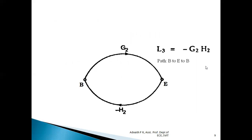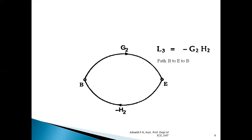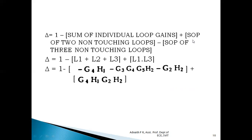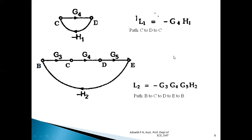Once we have identified the loops, we need to find the system determinant delta. It is given by: delta = 1 − (sum of individual loop gains) + (sum of products of two non-touching loops) − (sum of products of three non-touching loops). The sum of individual loop gains L1 + L2 + L3 is straightforward since we already know each loop gain. The next important step is to identify which loops are non-touching.